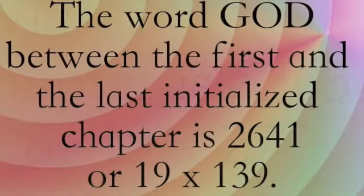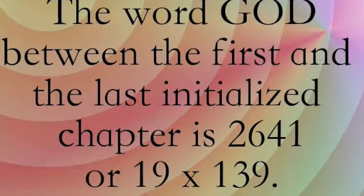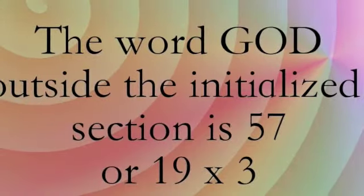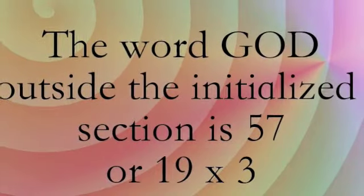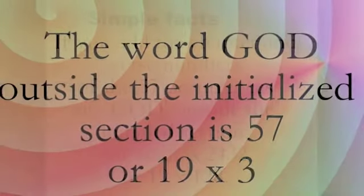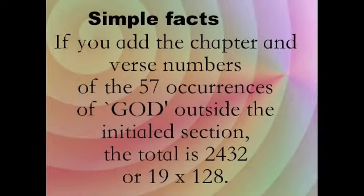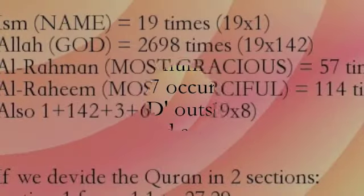The word 'God' between the first and the last initialized chapters occurs 2,641 times, or 19 times 139. The word 'God' outside the initialized section occurs 57 times, or 19 times 3. If you add the chapter and verse numbers where the word 'God' occurs in the non-initialized section, you get 2,432, or 19 times 128.